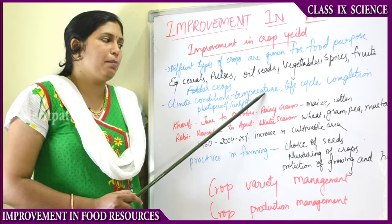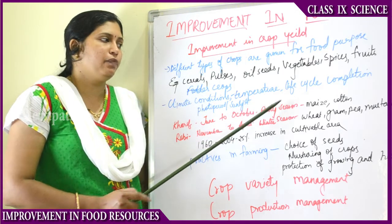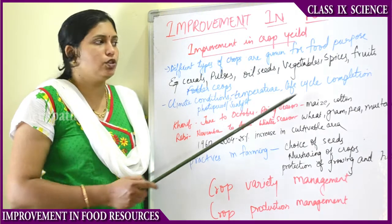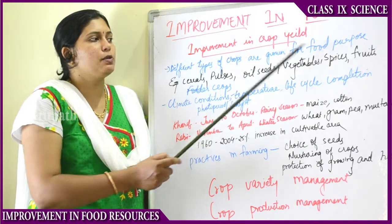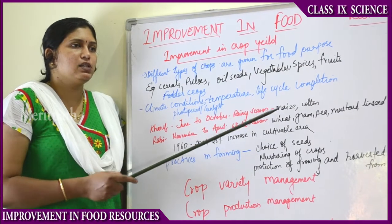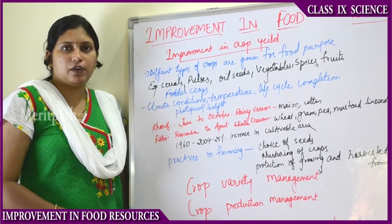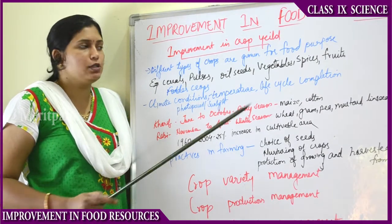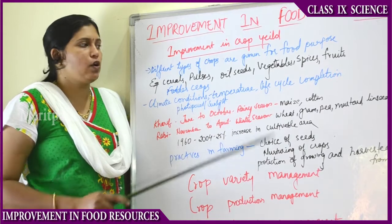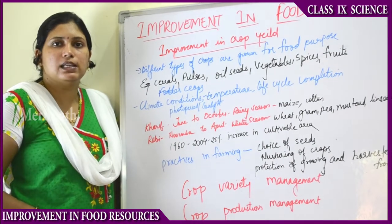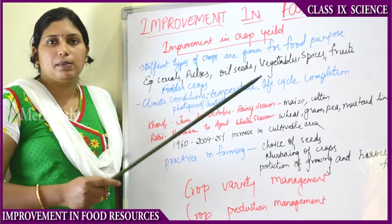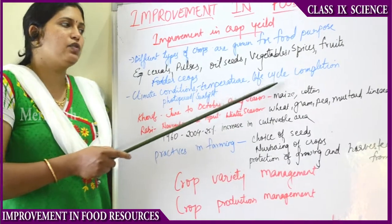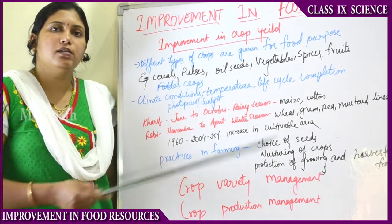Extreme temperatures like frost, extreme cold, or extreme heat will also affect crops, so temperatures need to be appropriate. Life cycle completion of the crop is also important. Life cycle completion means from starting the planting of seeds to the time you harvest - from sowing to harvesting. This includes growing the seeds, cultivating, watering, irrigation, protecting from weeds, storage, and harvesting.